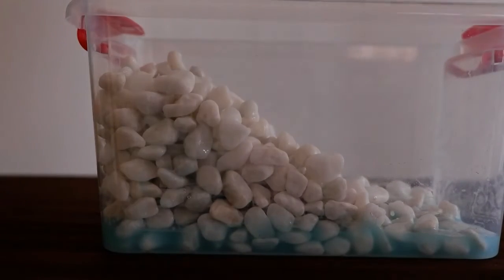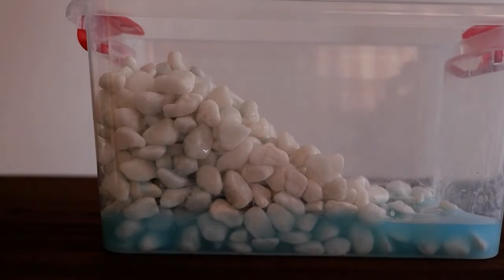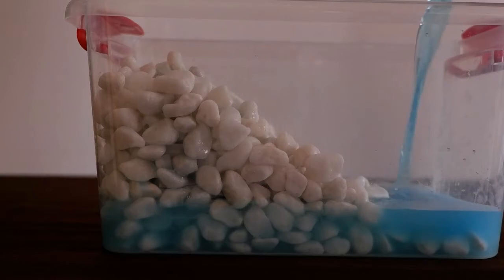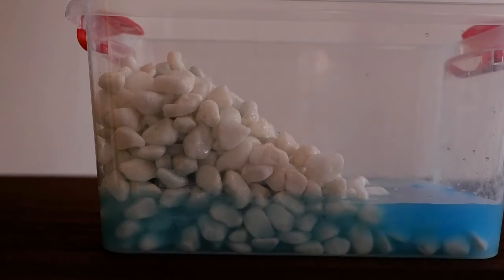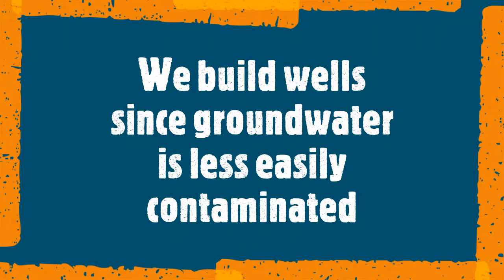When it rains over the ground, the groundwater and surface water level increases, or recharges. Sometimes rivers, lakes, and ponds can become contaminated by nutrients, oil and gas, or bacteria. That's why we build wells to pull up groundwater that is less easily contaminated.